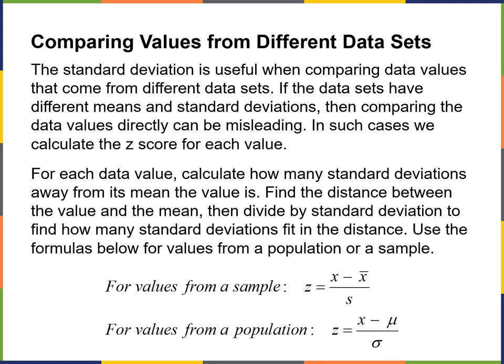If we want to compare values from different data sets, we can do that. The standard deviation is useful when comparing data values that come from different data sets with different means and standard deviations. If we compare them directly, that can be misleading. In such cases, we calculate the Z score for each value — for each data value, we can calculate how many standard deviations away from its mean the value is. We find the distance between the value and the mean, then divide by the standard deviation.